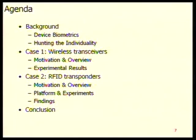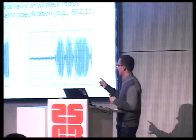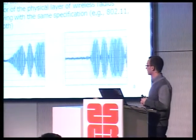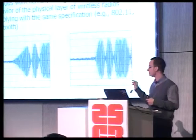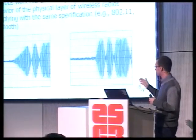Now the first case study: wireless transceivers. Wireless radio specification and manufacturing processes are quite complex today. Previous work has shown significant differences in physical layer behavior even within the same specification from different devices. Here on the picture are two different wireless cards both supporting the 802.11 standard. Even though they implement the same specification with the same delays and timings, you can see a clear difference in the physical signal.